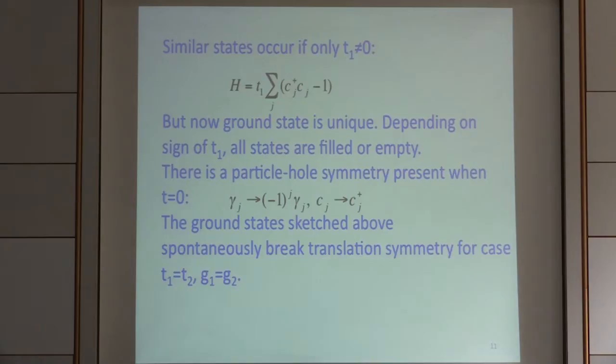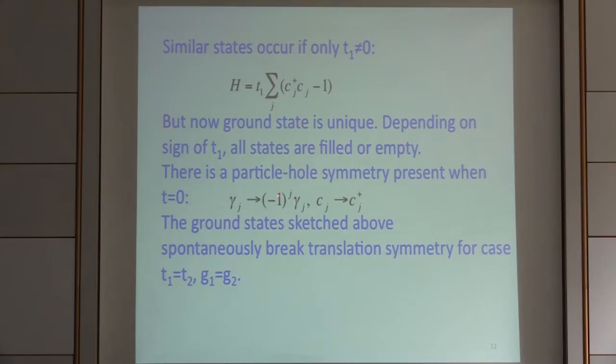If we include only the hopping term T1, we can write it in terms of Dirac fermions and it looks like a simple chemical potential term. This splits the degeneracy between all states being filled or empty and chooses one or the other. There's a particle-hole symmetry present when T equals zero, which makes all states filled or empty degenerate, but it's broken once we include T.